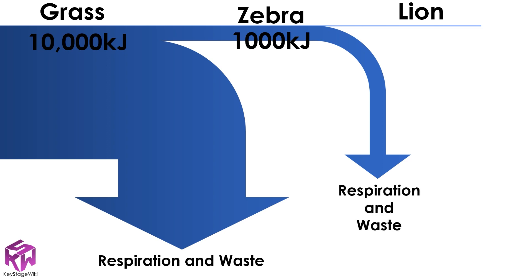After that, the zebra use energy themselves for respiration. When lions eat the zebra, they can't digest all of it, so more energy is wasted. That means the lions will only gain around 100 kilojoules of energy. In this way, energy is lost at every stage on a food chain.